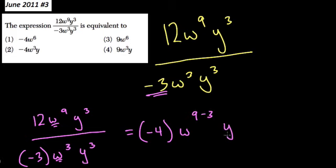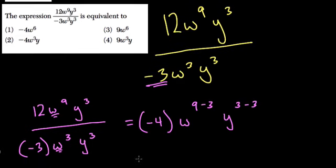And then y to the 3rd over y to the 3rd. And I'll show you that's just, of course, 3 minus 3.